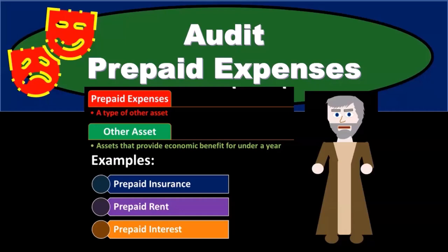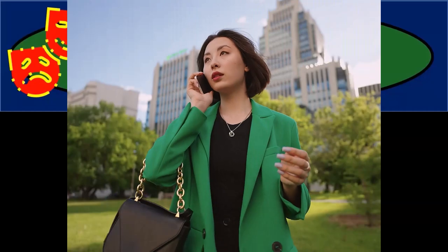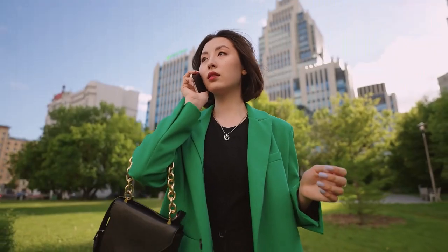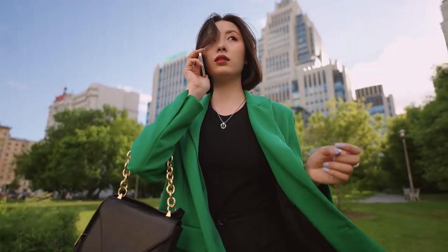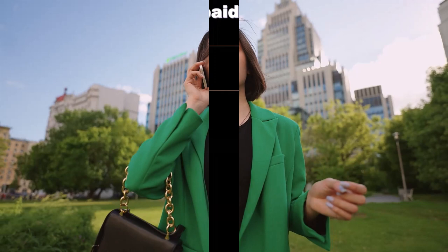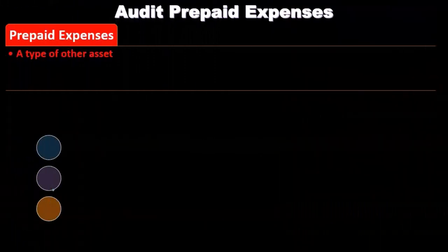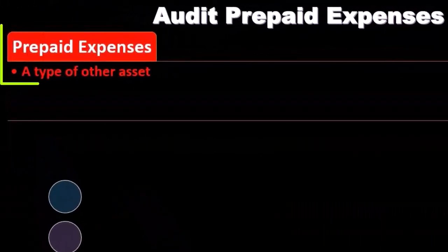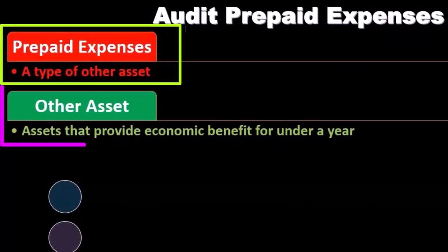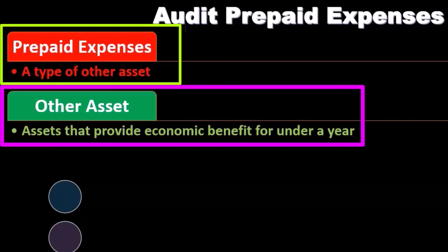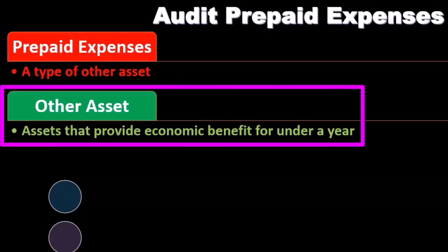In this presentation we will discuss the audit process related to prepaid expenses. We'll start off with discussing what prepaid expenses are. Prepaid expenses are a type of other assets, which leads to the question of what other assets are. Other assets are assets that provide economic benefit under a year.